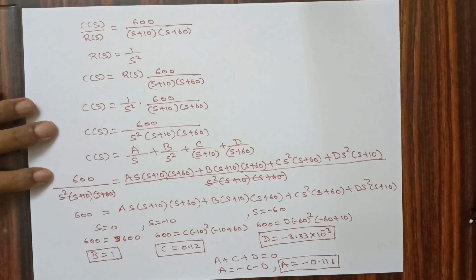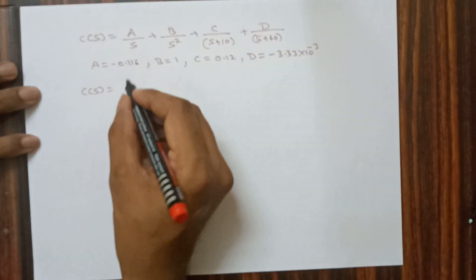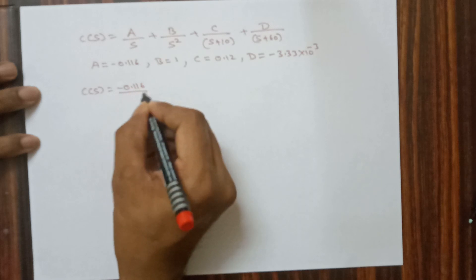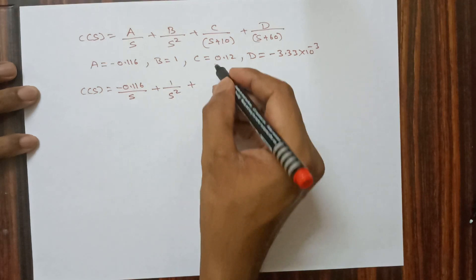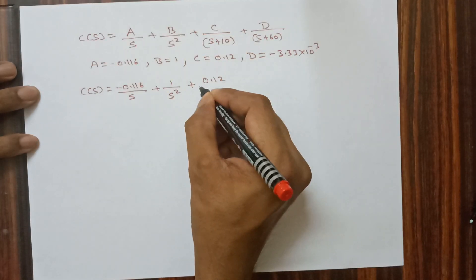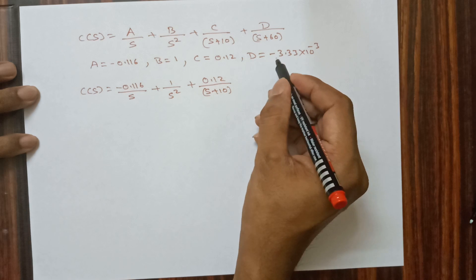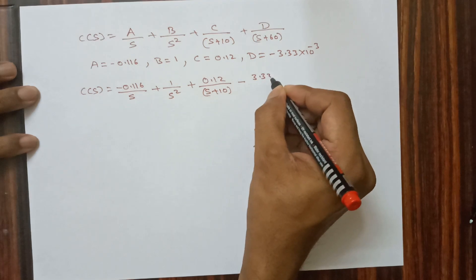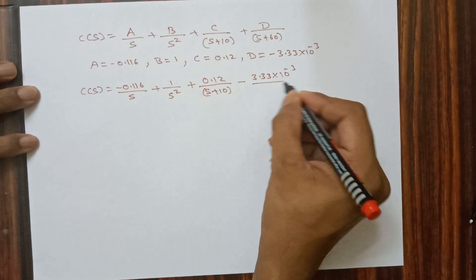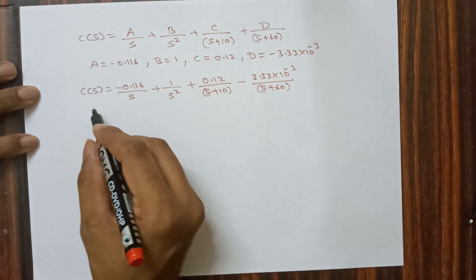Substituting all values into C(s): C(s) = (-0.116)/s + 1/s² + 0.12/(s+10) + (-3.33×10⁻³)/(s+60).